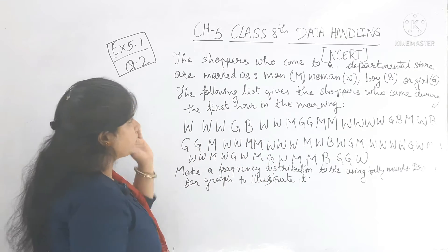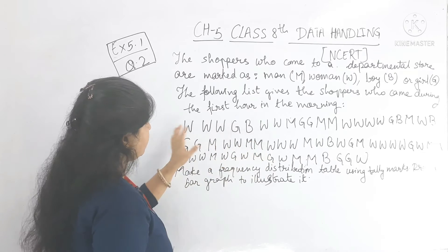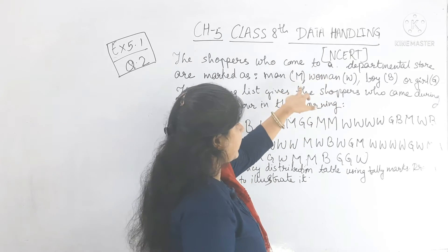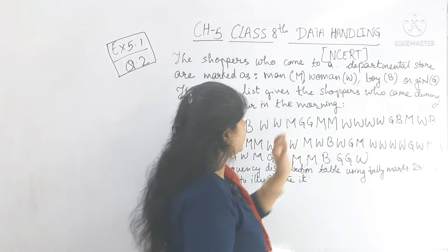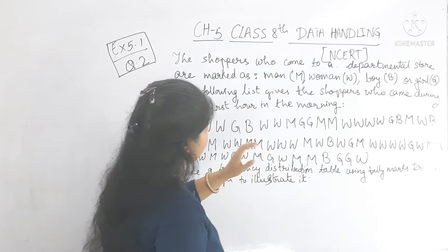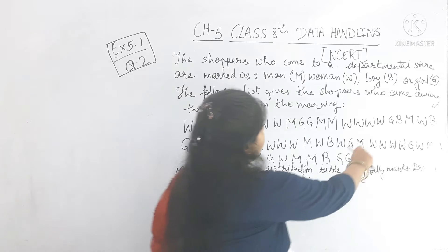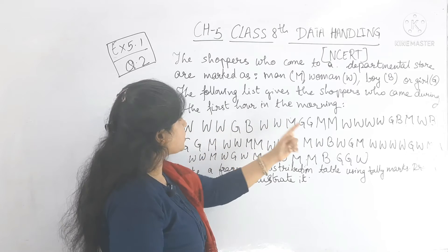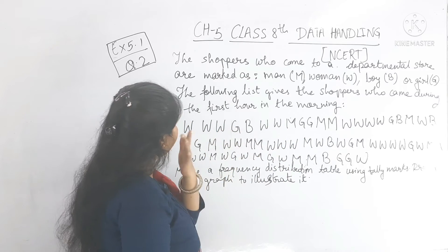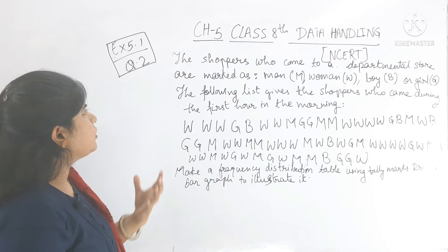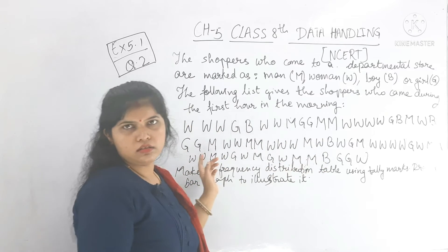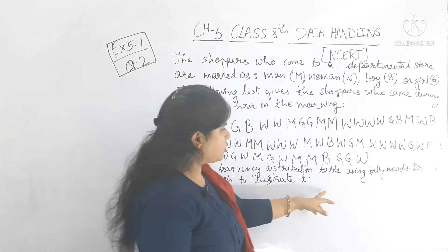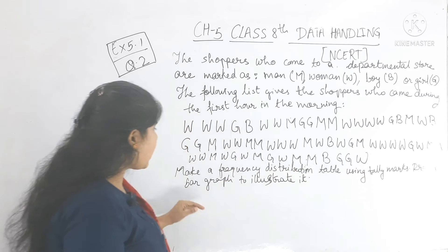Next is question number 2. Some data is given using codes: W for woman, M for man, B for boy, and G for girl. The list gives shoppers who came during the first hour in the morning at a departmental store. We have to make a frequency distribution table using tally marks and then draw a bar graph to illustrate it.